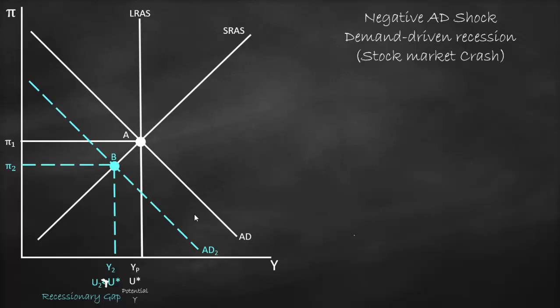At point B we don't have an equilibrium, because the three curves — the long-run aggregate supply curve, the short-run aggregate supply curve, and aggregate demand — don't all intersect at the same point. Therefore, here we have a recessionary gap.